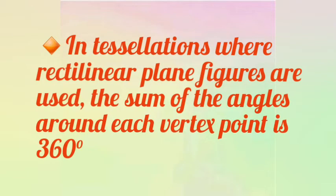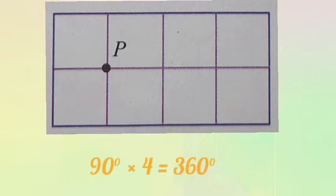In a tessellation where rectilinear plane figures are used, the sum of the angles around each vertex point is 360 degrees. If we consider the point P in this tessellation, the sum of the angles around that point can be found by 90 degrees multiplied by 4, that is 360 degrees.